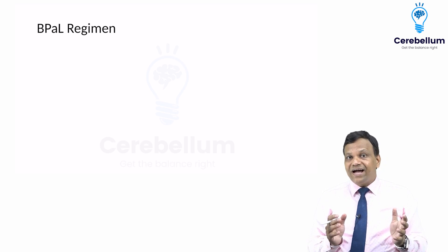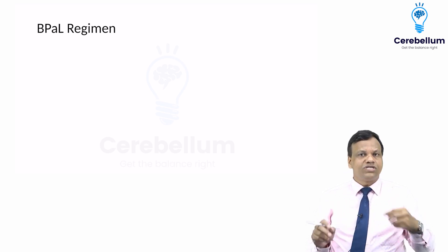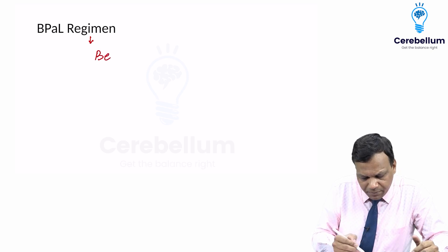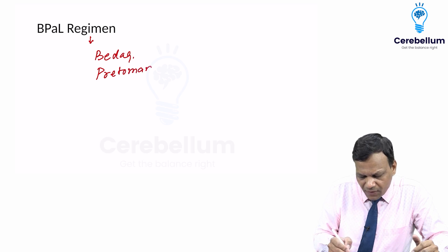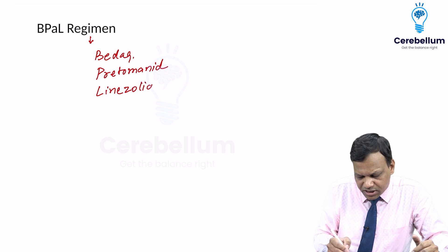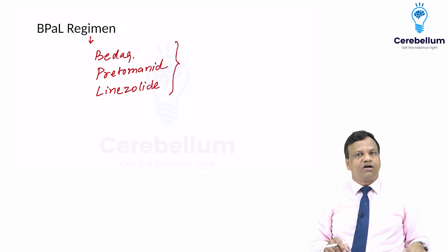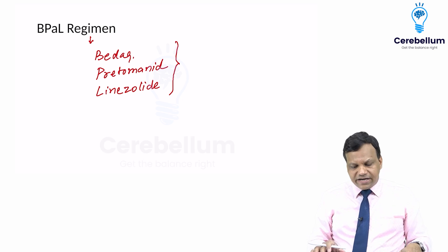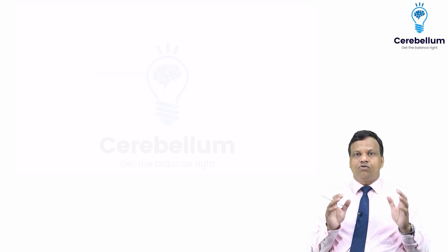Recently, one more regime has come — the BPaL regime — which is experimental in India and not yet approved. BPaL consists of Bedaquiline (B), Pretomanid (Pa), and Linezolid (L). This regime can be used for MDR and XDR-TB but is only on an experimental basis currently.